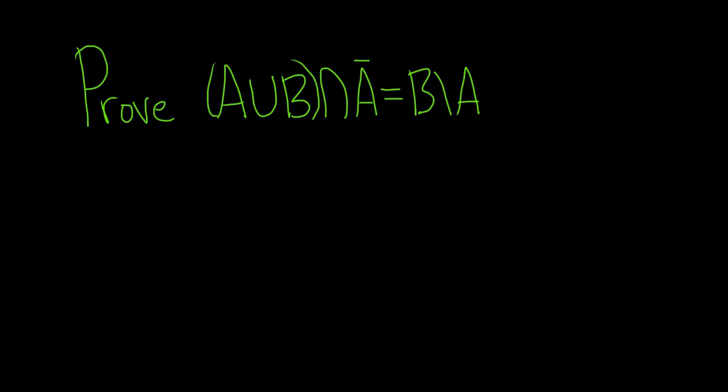Before we start the proof, let me just clarify some notation here. So when you see something like A complement, this can also be written as A̅—both are the same thing depending on the author. It's basically the set of all x such that x is not in A. So it's everything that's not in A.